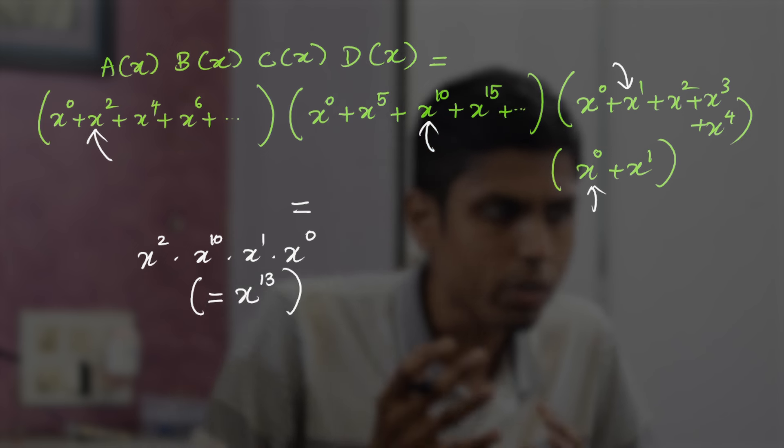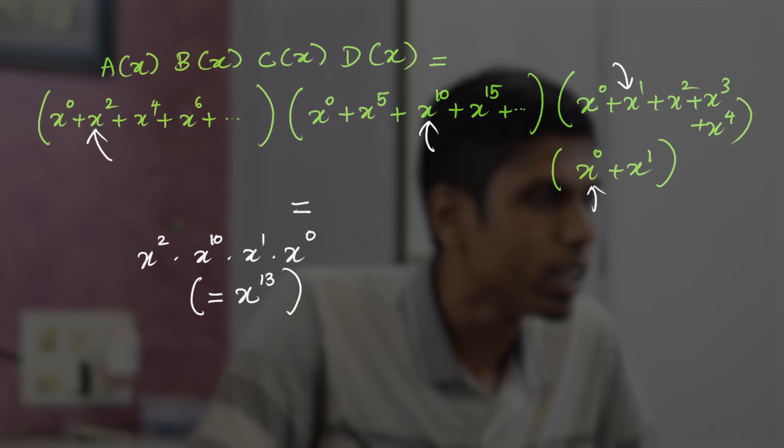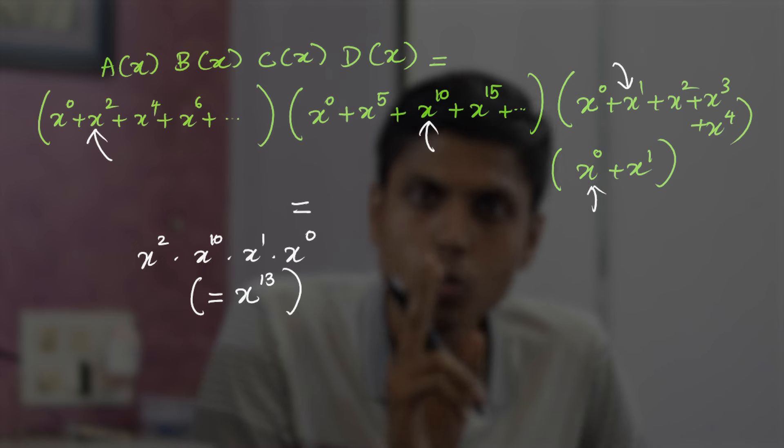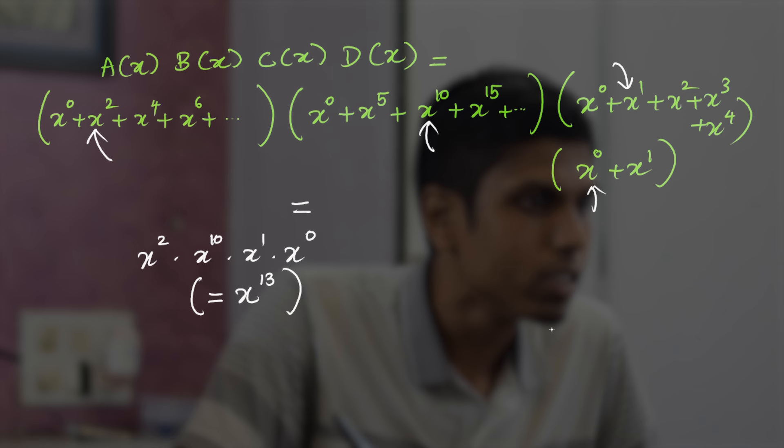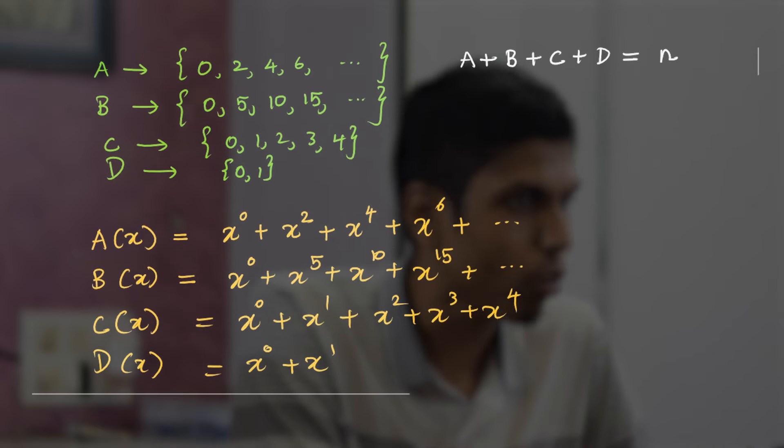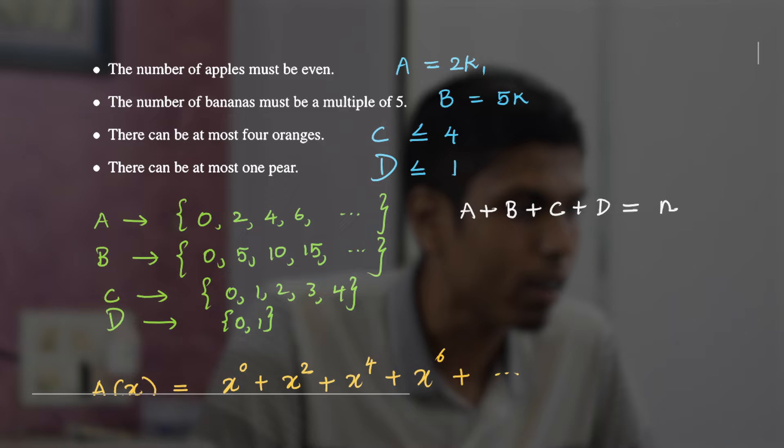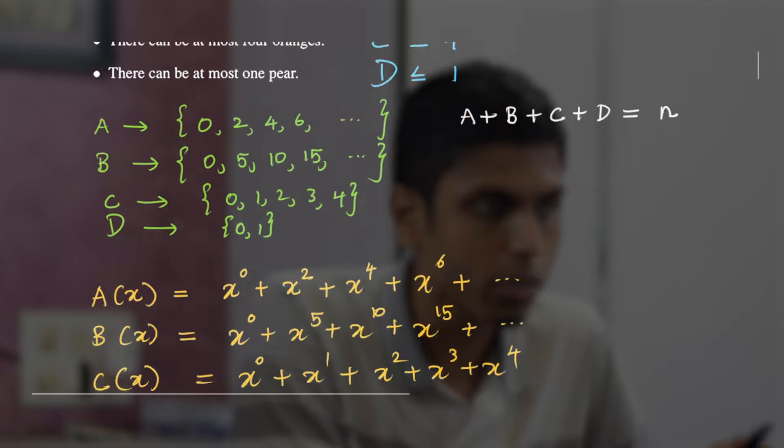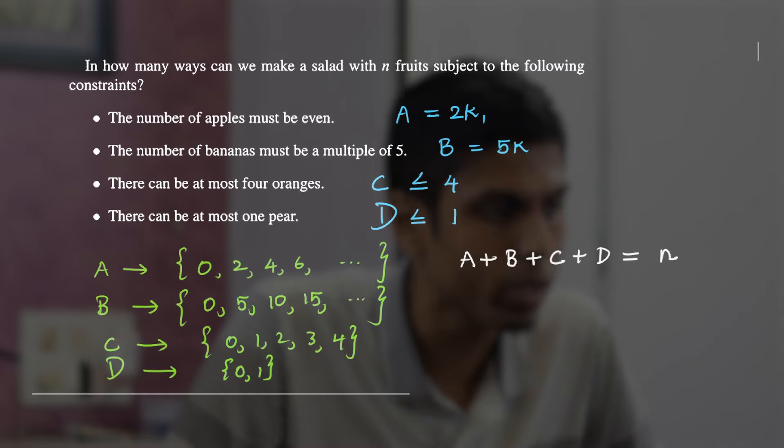But now, how is combinatorics coming into the picture? It's very simple. Choosing x^2 means that you are choosing two apples for the salad. Choosing x^10 means you are choosing 10 bananas, and x^1 in C(x) means one fruit for C, which is orange, and for pear you are choosing x^0, which means you don't want it to be in the salad. Thus, we are making a salad by multiplying four factors in algebra. Isn't that interesting?